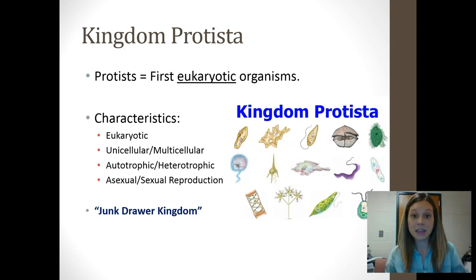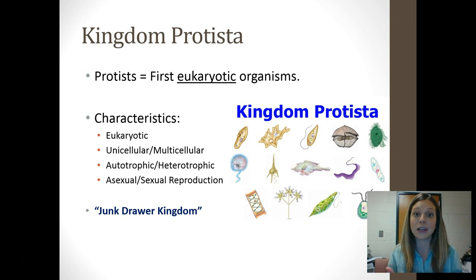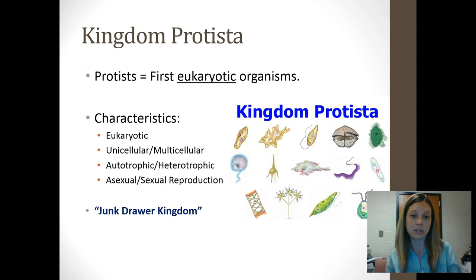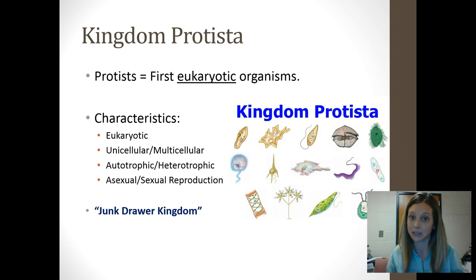We think the very first eukaryotic organisms are similar to what we now call protists. They're a very diverse kingdom. There's only one unifying characteristic: they are all eukaryotic. Some protists are unicellular, some are multicellular, some are autotrophic, some are heterotrophic, some reproduce asexually, and some reproduce sexually.